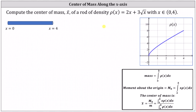Because we have a variable density, we calculate the center of mass by determining the quotient of the moment about the origin and the mass. The moment about the origin is equal to the integral from a to b of x times ρ(x) dx, and the mass equals the integral from a to b of ρ(x) dx.